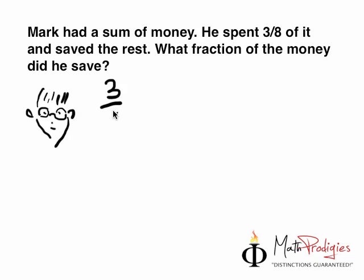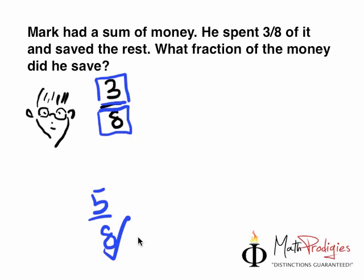As we have learned yesterday, this number below is the number of total parts. And this is the number that he actually saved. By the way, your answer should be - if you've done the question, your answer should be 5 over 8. Did you get it right? If you got it right, give yourself a high-five. You are a math prodigy. Good job.